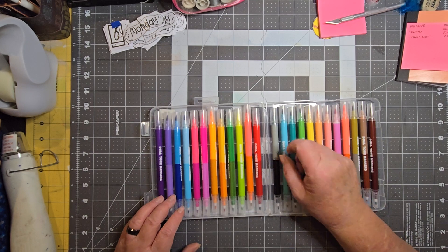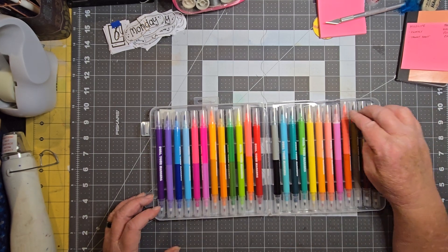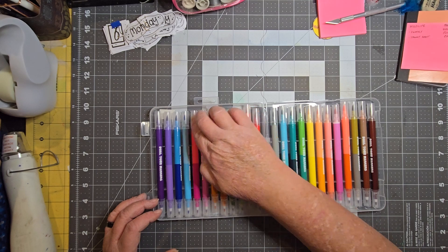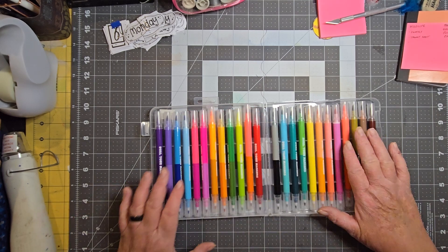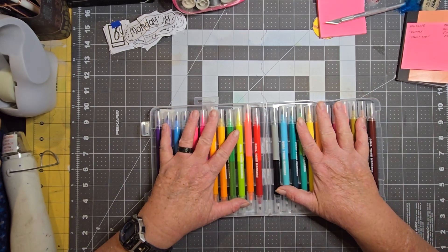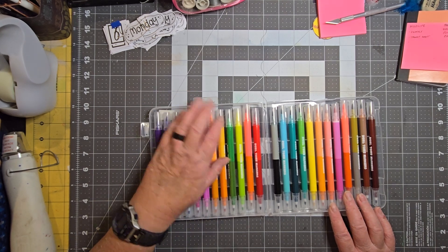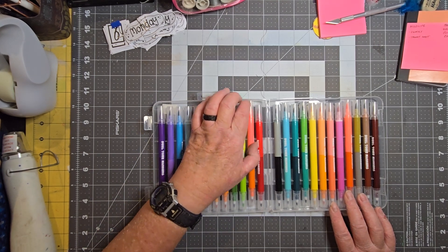Yeah, so for five bucks, that's 2, 4, 6, 8, 10, 12, 14, 16, 18, 20, 22, 24. Twenty-four pens, but forty-eight different colors. So that's not terrible for five dollars.